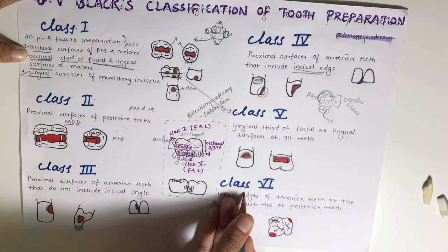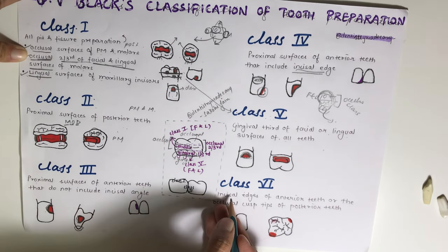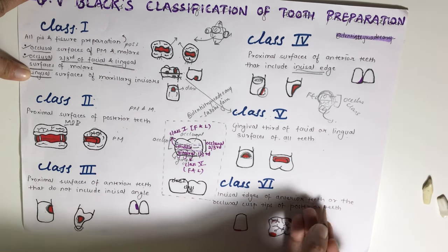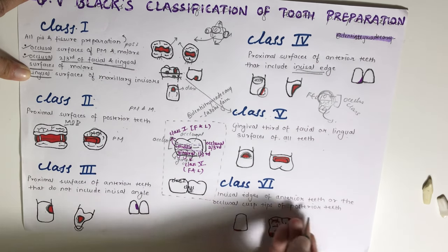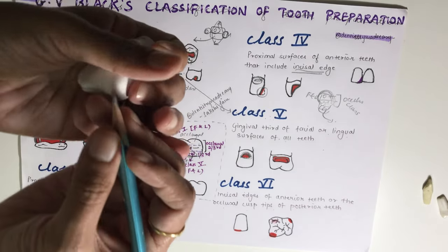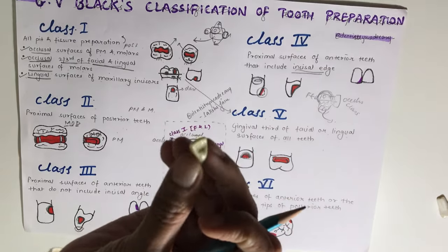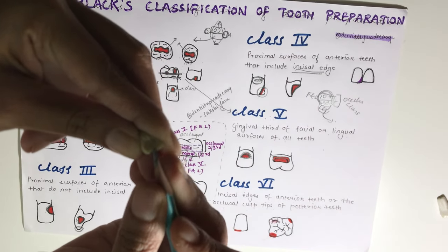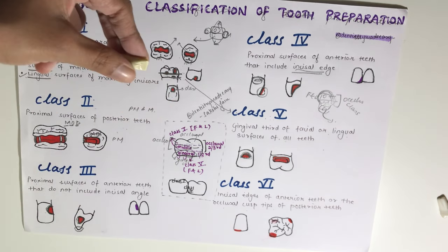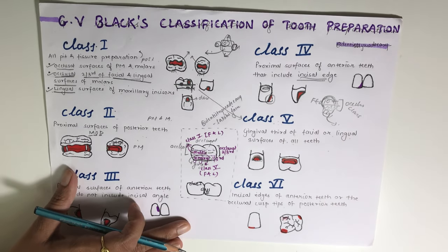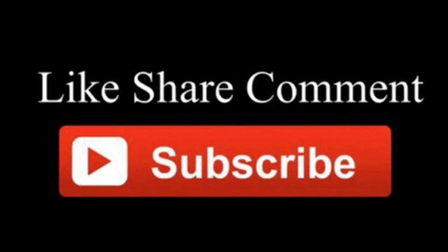Class 6 was added later and covers preparations done on the incisal edge of anterior teeth or the occlusal cusp tip of posterior teeth. If you are doing a preparation only on the cusp tip of a posterior tooth, or only on the incisal edge of an incisor, that is Class 6. That covers all six classes - I hope you found this video helpful. Please like, comment, share, and subscribe. Thank you.